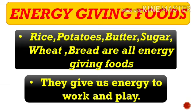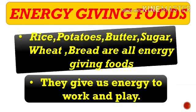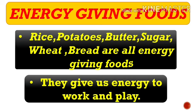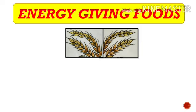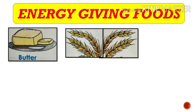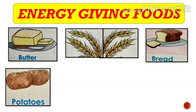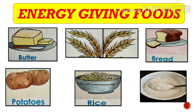First is energy-giving foods. Foods like rice, potatoes, butter, sugar, wheat and bread are all energy-giving foods. These types of food give us energy to work and play. Energy-giving foods are rich in carbohydrates and fats. Some examples are wheat, butter, bread, potatoes, rice and sugar. We make chapatis from wheat.